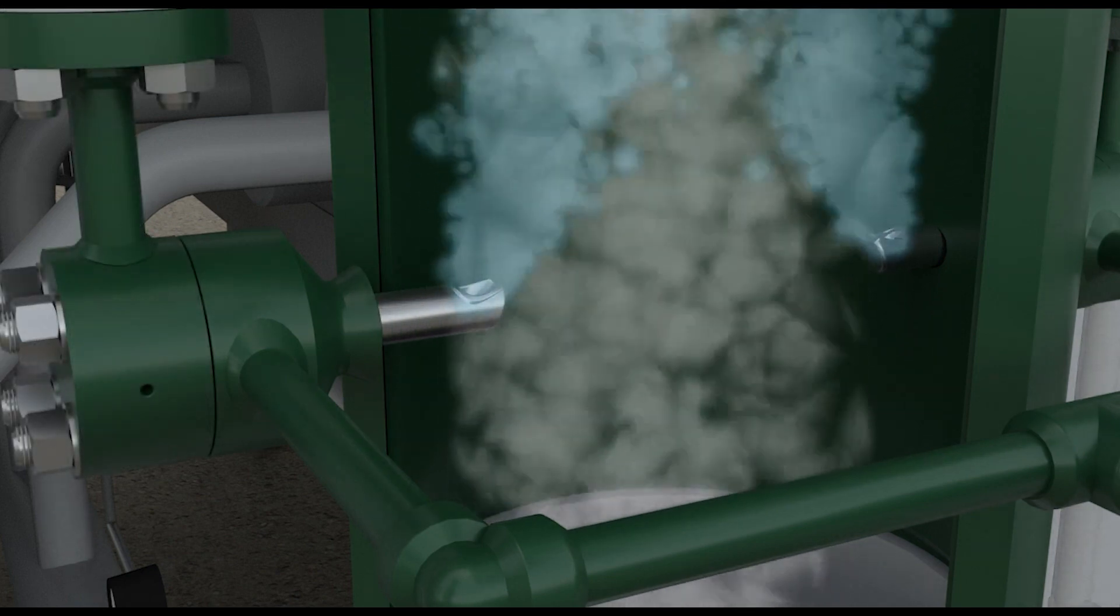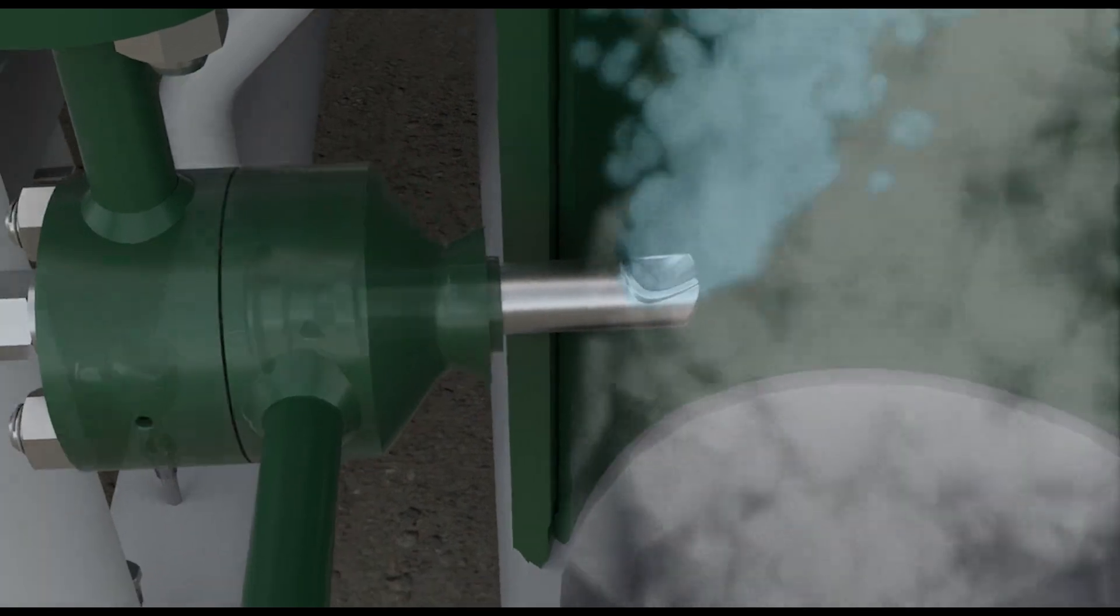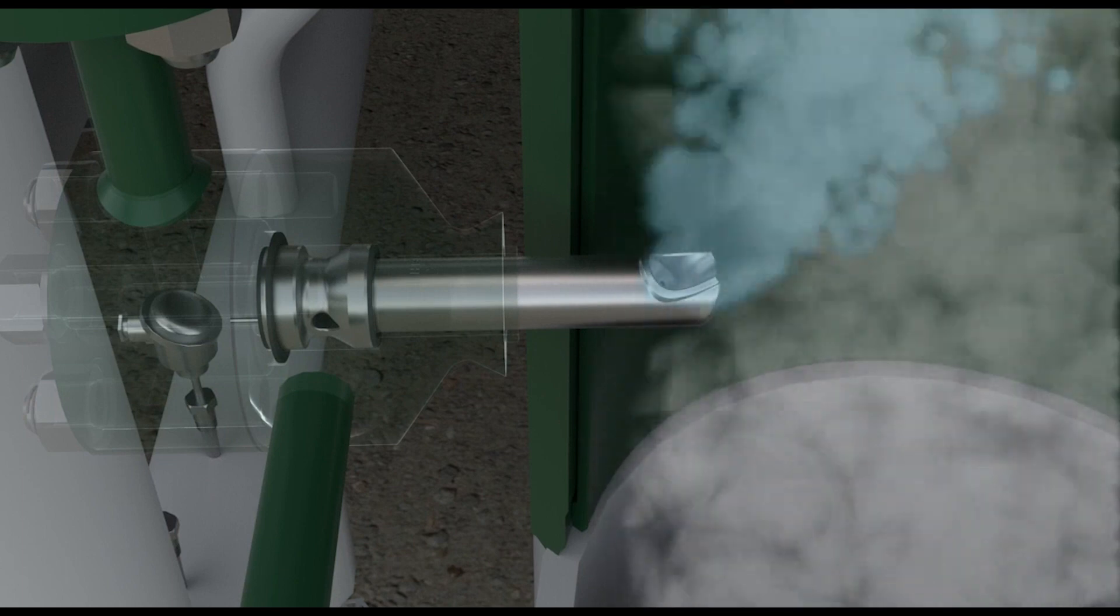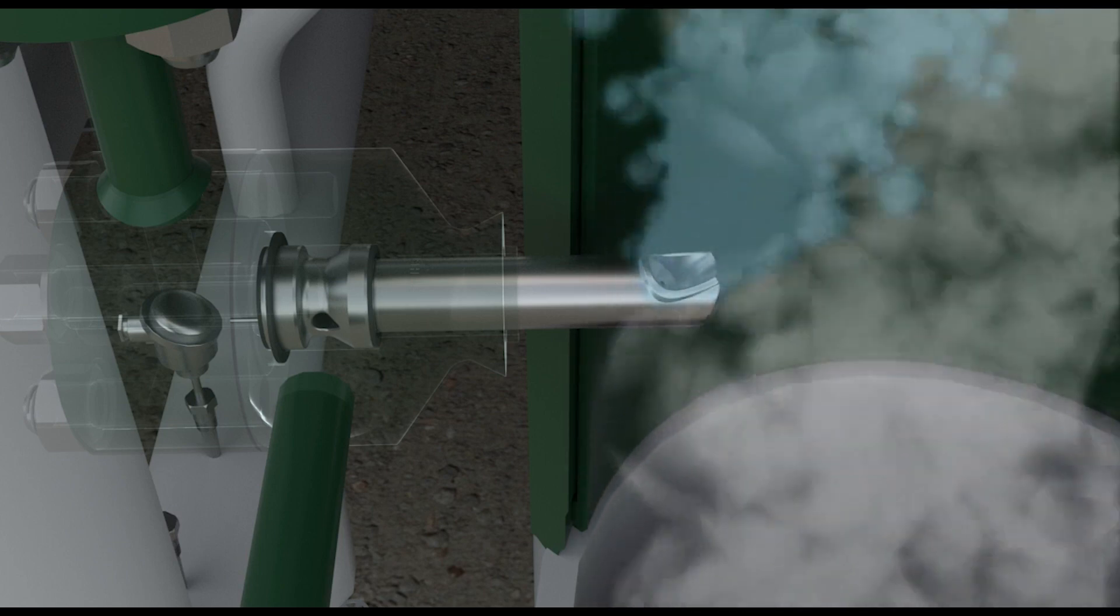The Fisher AT-ST steam atomized attemperator can help combined cycle power plants maintain ideal steam temperature under these load changes. The attemperator features an innovative spray nozzle that uses high-speed vapor to atomize water into a fog-like mist and has a much wider operating range.